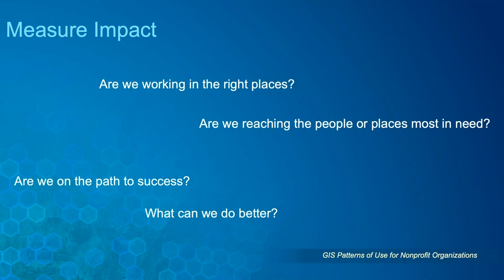Moving on to the second GIS pattern of use for nonprofits: measure impact. This pattern highlights the ways nonprofits can use GIS to better understand their progress and the outcomes of their work, lending itself to questions like: Are we working in the right places? Are we reaching the people or places most in need? Are we on the path to success? And what can we do better? To measure impact, an organization must identify the indicators and data that reflect progress toward their goals. This is where data collection, integration, and analysis capabilities of GIS can bring new ways to understanding progress, outcomes, and overall impact.